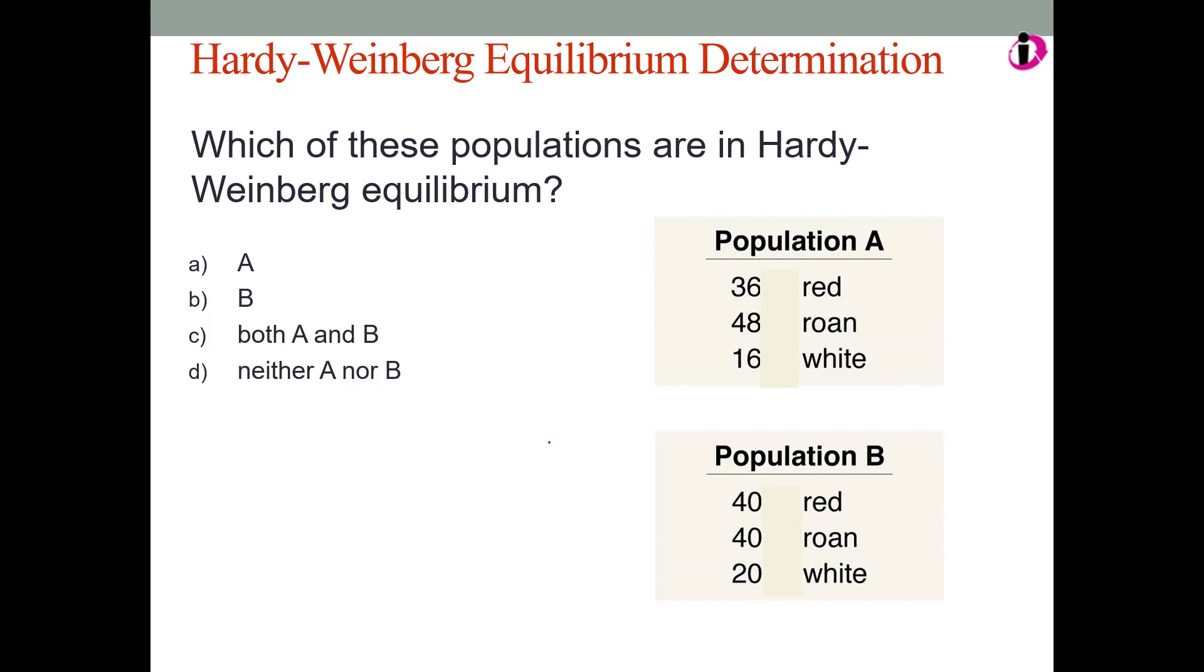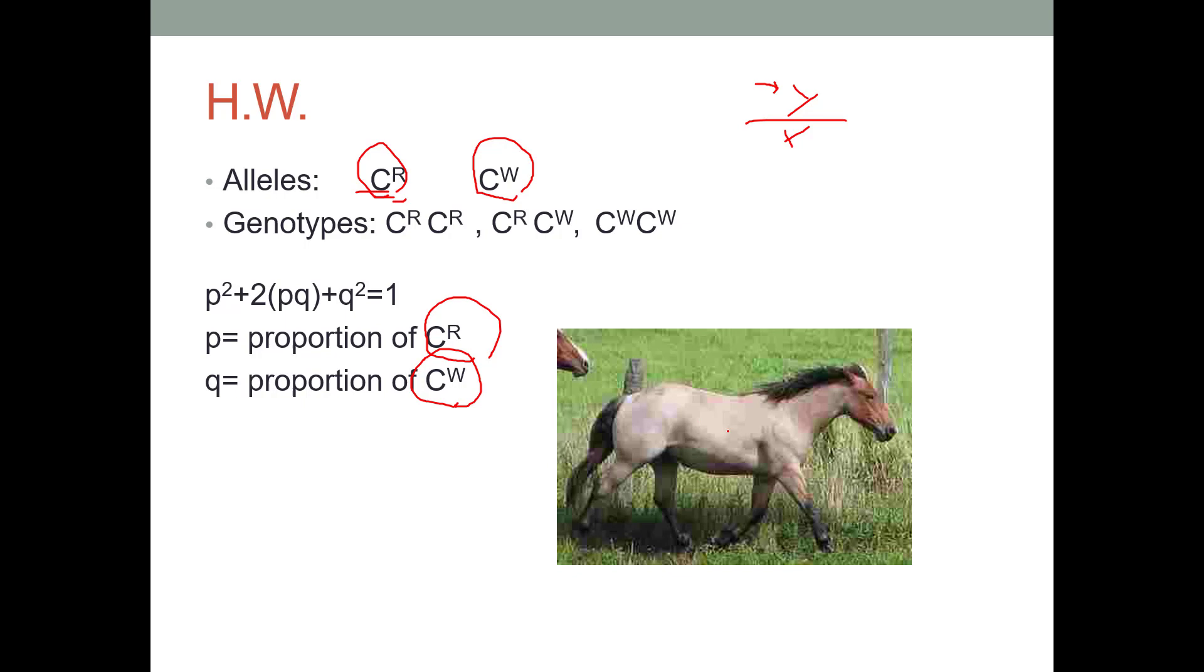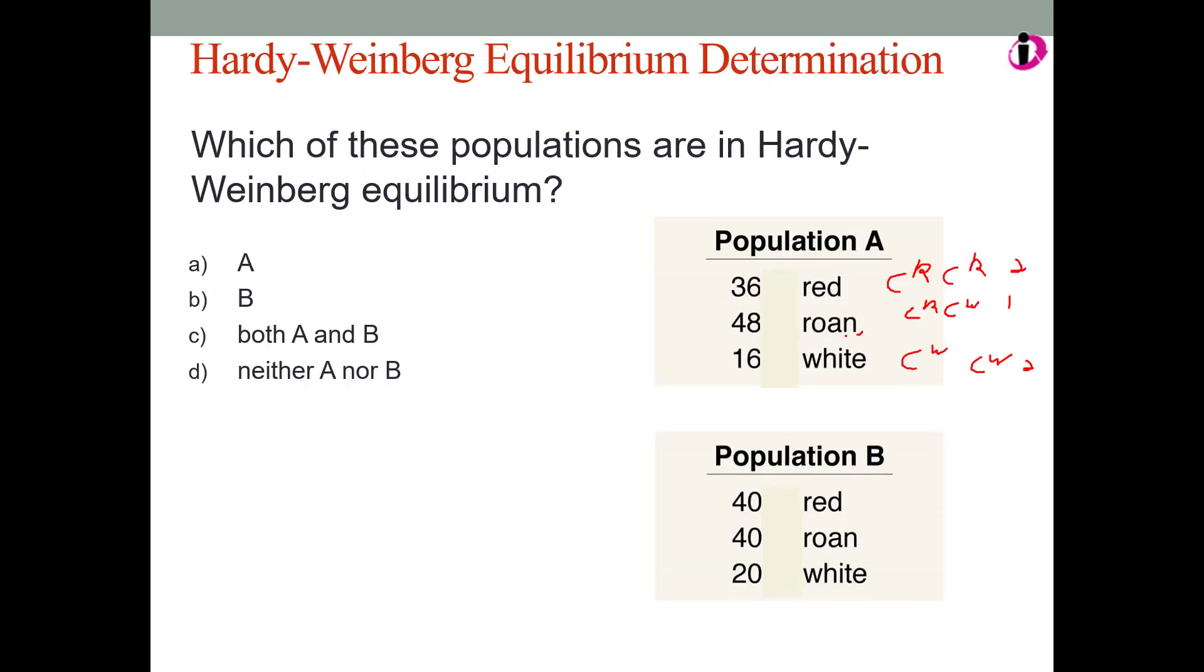So, population A has 36 red horses, 48 roan horses, and 16 white horses. Remember a red horse will be CR CR. White will be CW CW. And roan will be CR CW. That means there are two red alleles in every red horse. There is one red allele in every roan horse. Roan means red and white. And there are two white alleles in every white horse. Going back one slide, this is a roan horse here. It has red patches and white patches. Both alleles show up if they are present. That is what roan means.